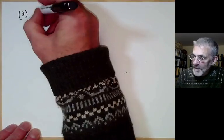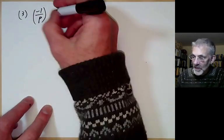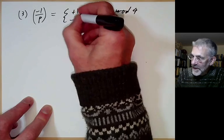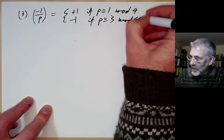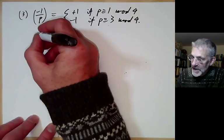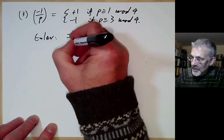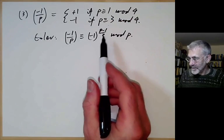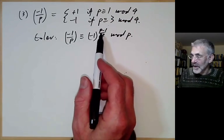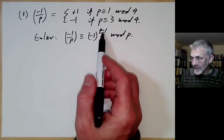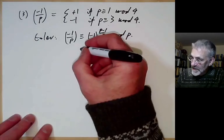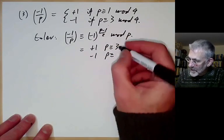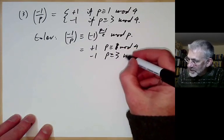The third property: we know whether or not −1 is a quadratic residue. We saw earlier that (−1/p) = +1 if p ≡ 1 mod 4, and −1 if p ≡ 3 mod 4. We can also prove this by Euler's criterion: (−1/p) ≡ (−1)^((p−1)/2) mod p. The exponent is even if p ≡ 1 mod 4, and odd if p ≡ 3 mod 4, giving +1 and −1 respectively.